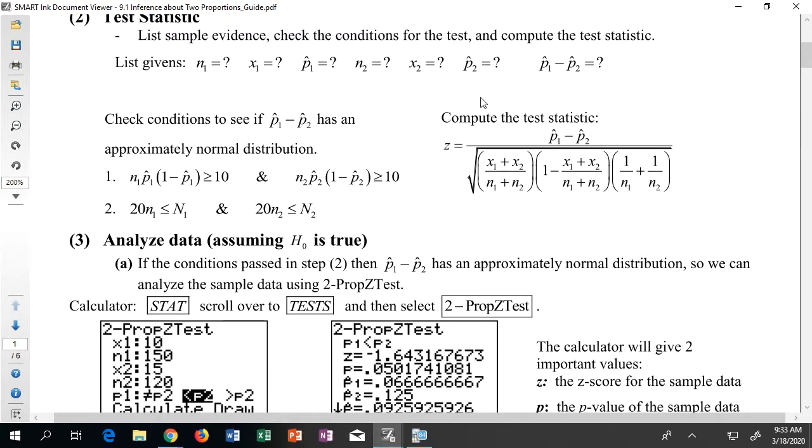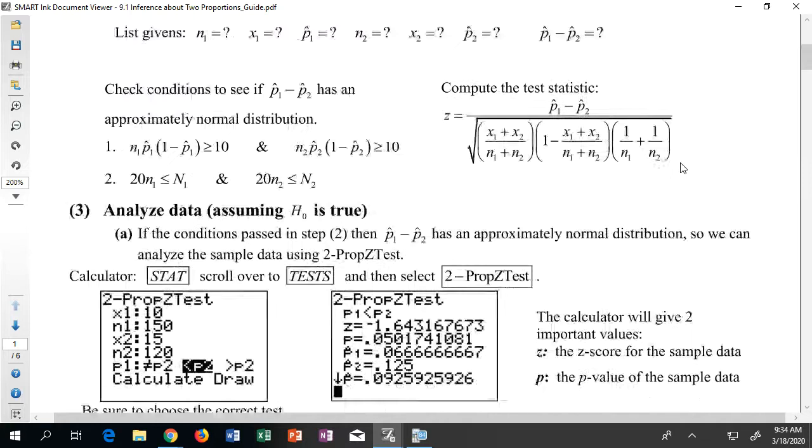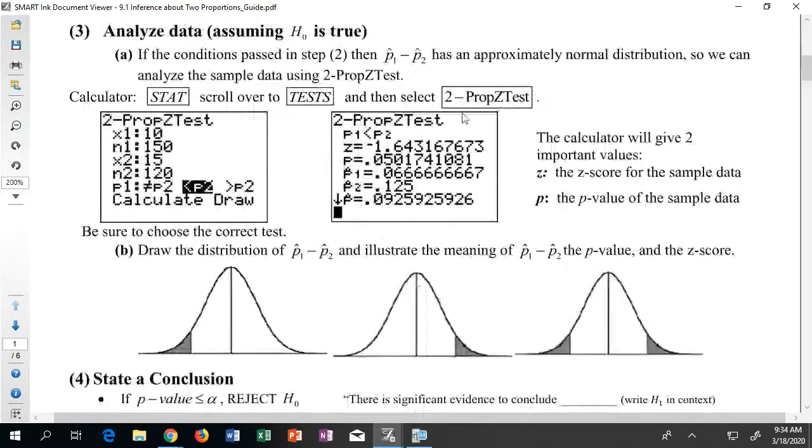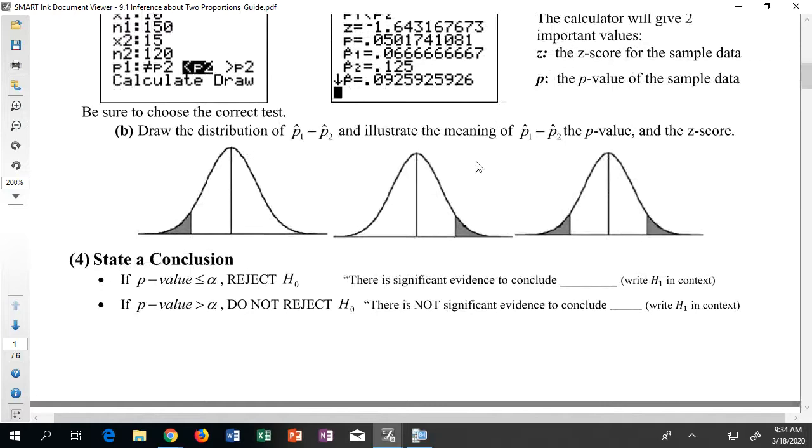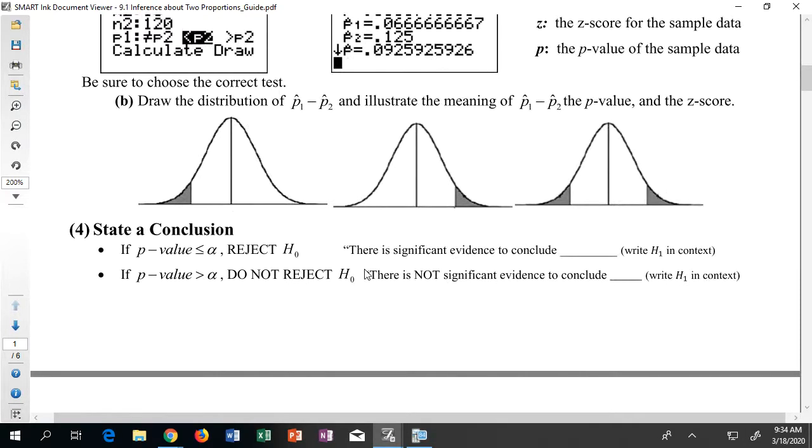We have this horribly complicated looking test statistic, but again it's only here designed to tell us a couple things. One, z means we have a normal distribution, and two, we have all these values that we need to find in order to be able to plug things into the calculator appropriately. We're going to be using a two prop z test on the calculator. We'll sketch out an associated picture whether it's left, right, or two-tailed, and then write our conclusion as we normally do.